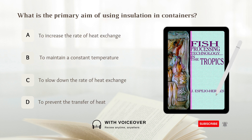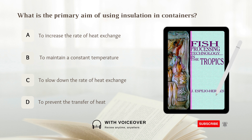What is the primary aim of using insulation in containers? Options: A. To increase the rate of heat exchange. B. To maintain a constant temperature. C. To slow down the rate of heat exchange. D. To prevent the transfer of heat. Answer: C. To slow down the rate of heat exchange.